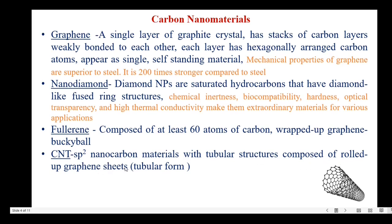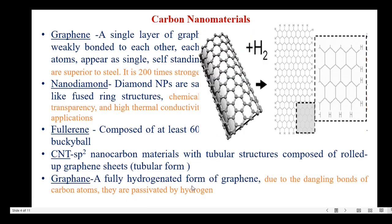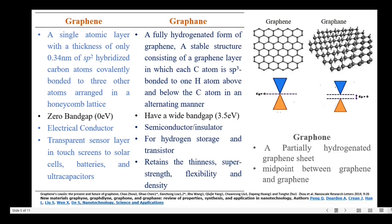The last one is graphane — a fully hydrogenated form of graphene. Graphene plus hydrogen forms graphane. Due to the dangling bonds of carbon atoms, they are passivated by hydrogen.